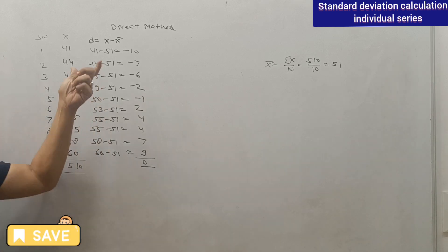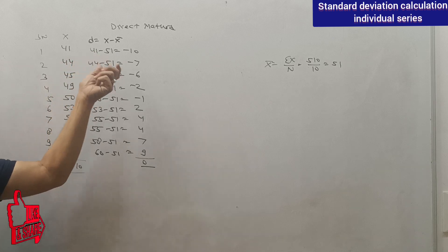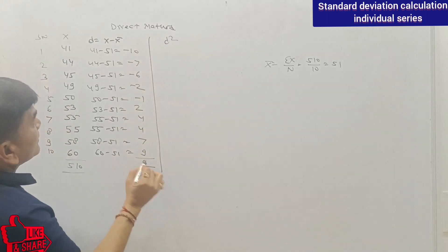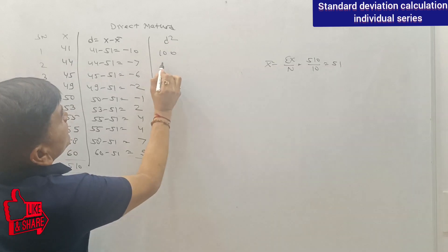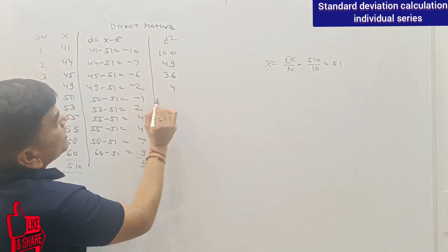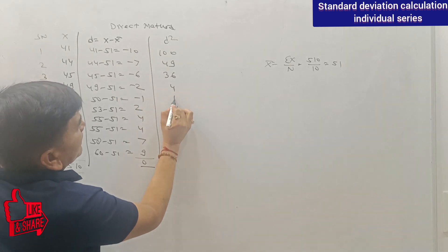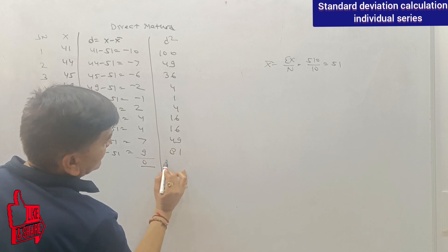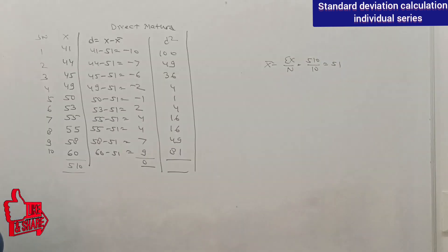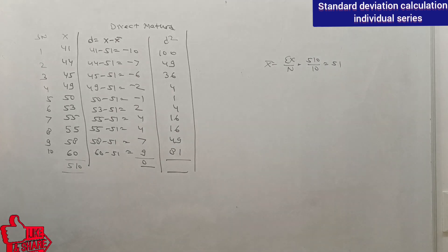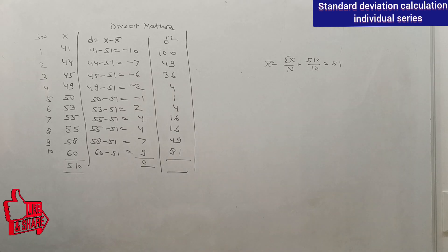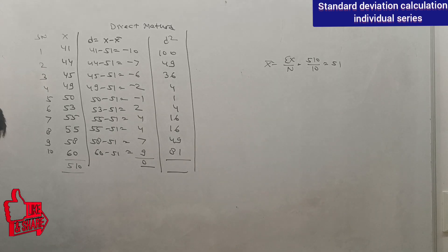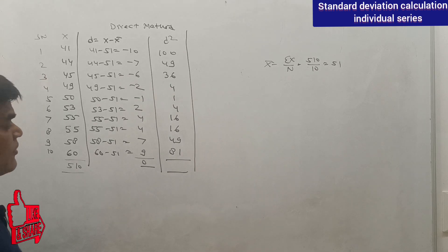The sum of deviations is always 0. Now we calculate D squared: (−10)²=100, (−7)²=49, (−6)²=36, (−2)²=4, (−1)²=1, 2²=4, 4²=16, 4²=16, 7²=49, 9²=81. Adding these: 100+49+36+4+1+4+16+16+49+81 = 356. So sigma D squared is 356.